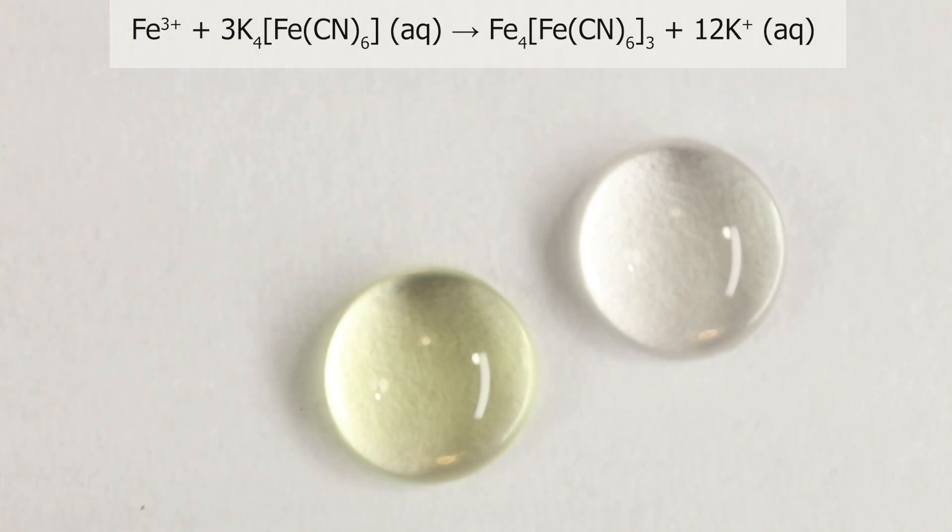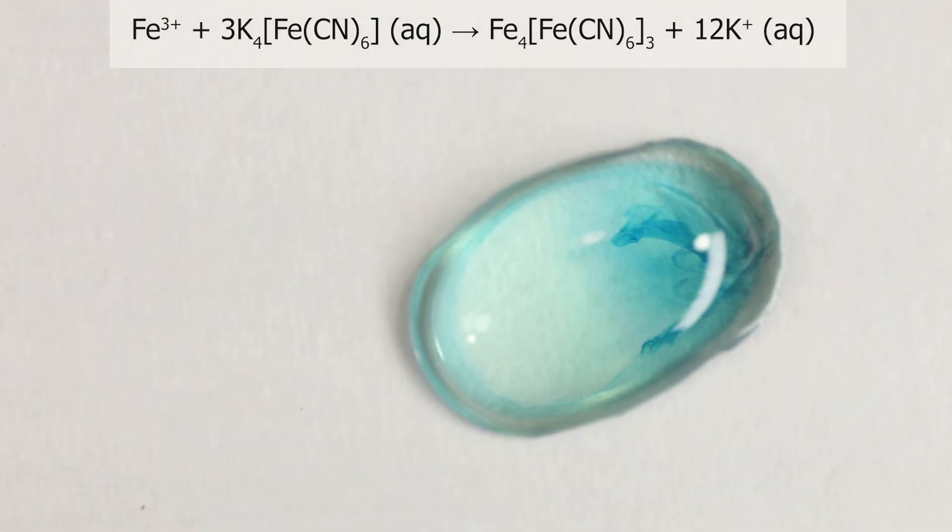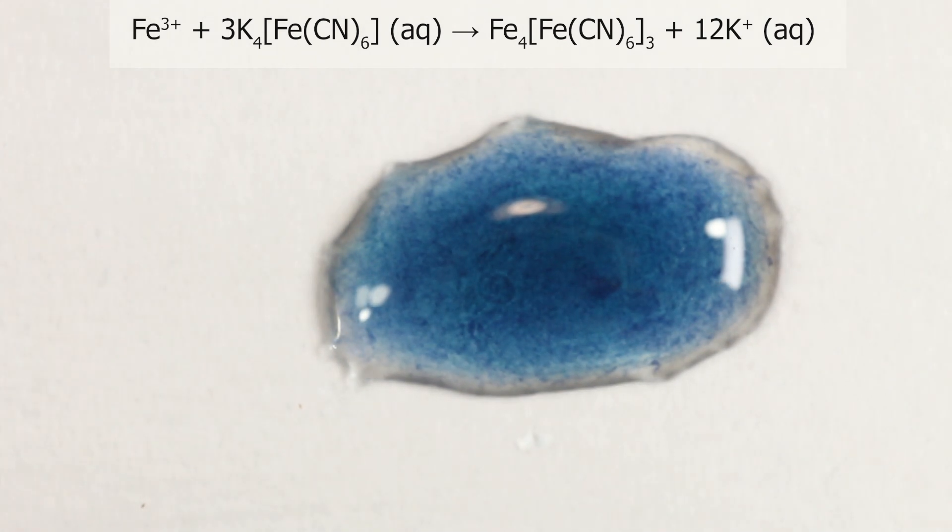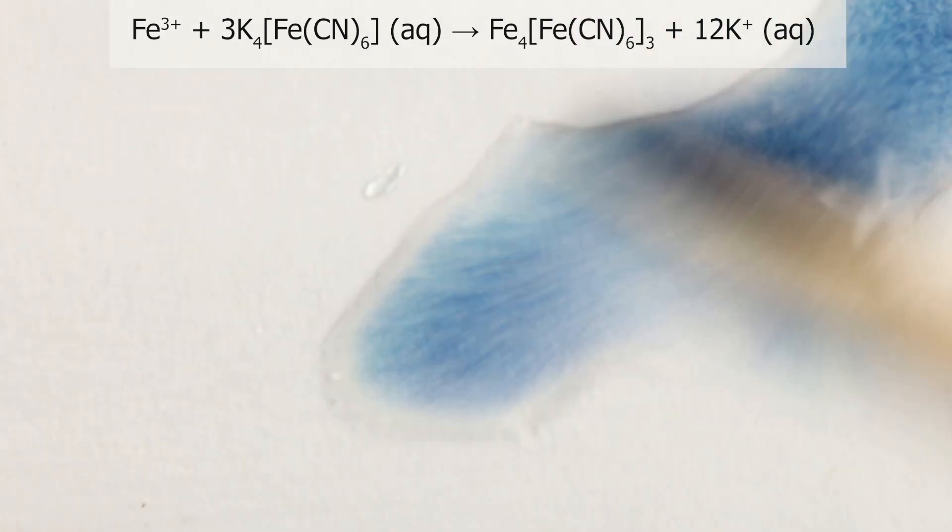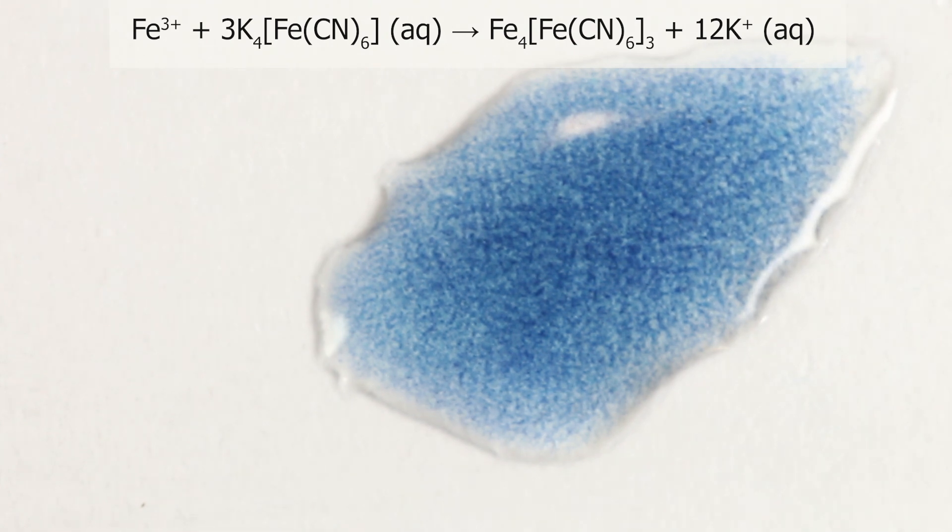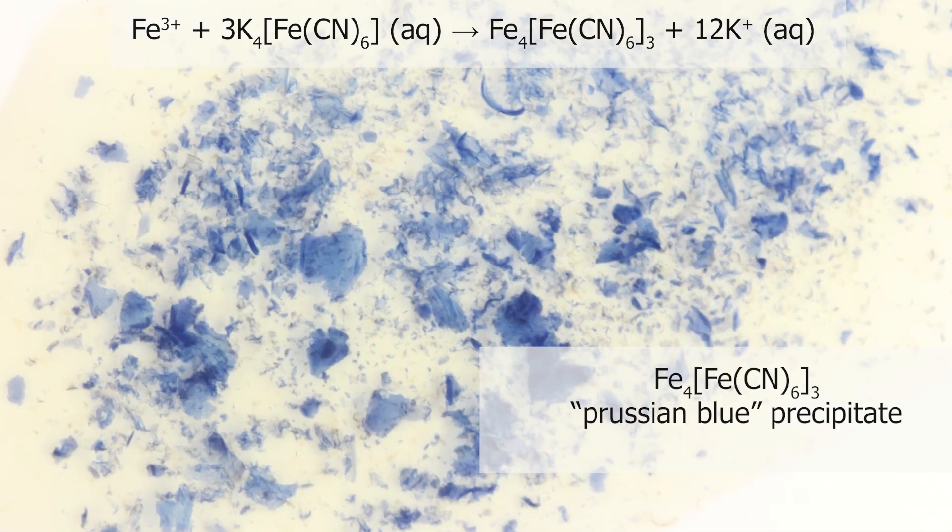Same thing on micro scale. It's not yet mixed. I have to help it. And you can see the small pieces of prussian blue precipitate. That's an enlarged picture.